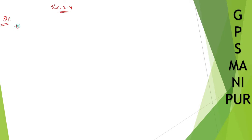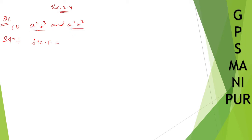We are doing exercise 2.4, question number one. The question says: find the HCF of the following polynomials. For roman number one, we have a²b³ and a³b². To find the HCF, you just take what is common in both. A² is common, so we take a². Then from b³ and b², we take b² common. So the HCF is a²b².